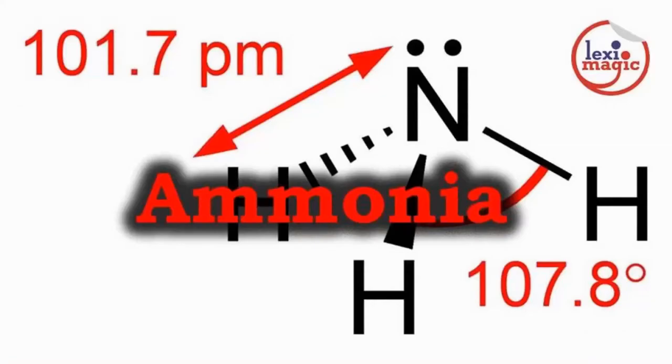Natron refers to hydrated sodium carbonate. Ammonia is a colorless, pungent, gaseous compound of nitrogen and hydrogen. Its origin is from the name of the ancient Egyptian god Amun.